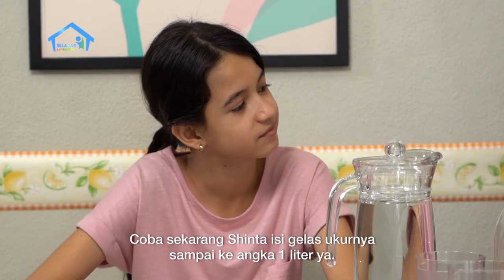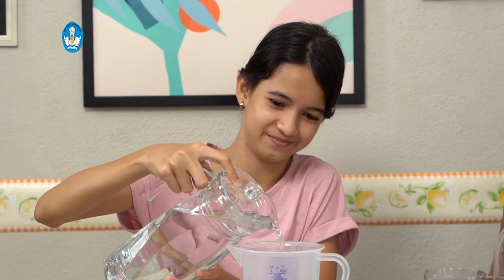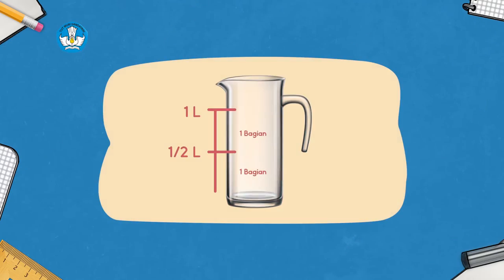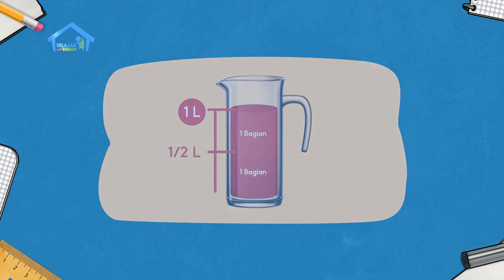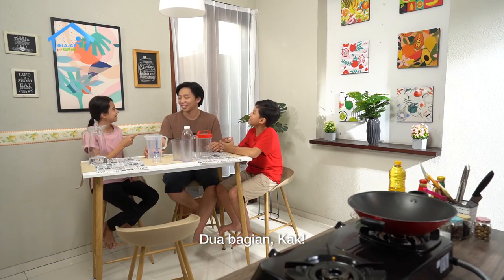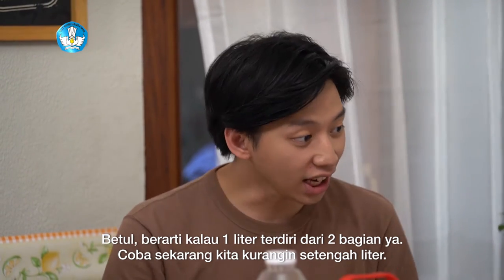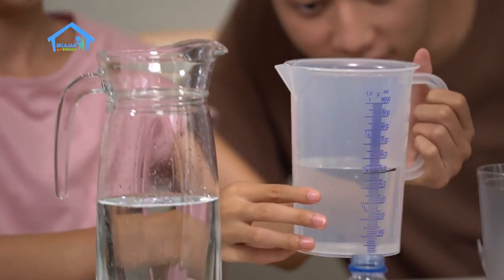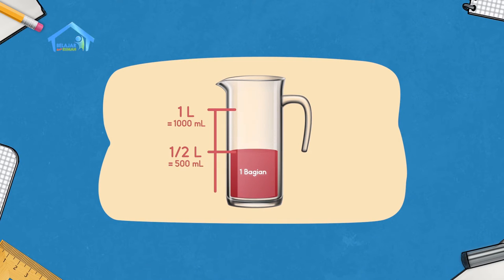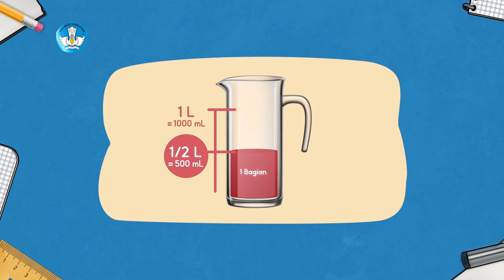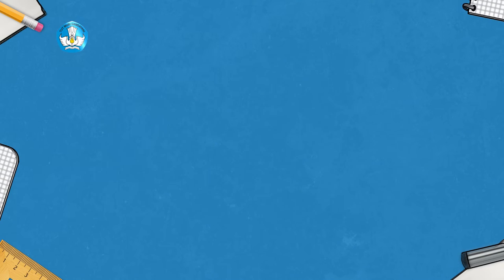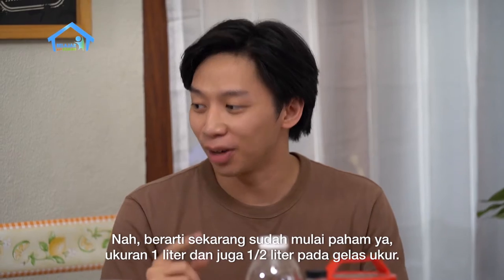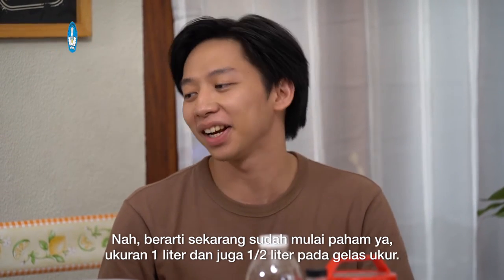Sekarang karena kita ingin mengetahui ukuran 1 liter dan juga 500 ml, Kak Jo akan kasih tanda pada bagian setengah yaitu 500 ml ya, bagian tengah. Berarti sekarang ada satu bagian di atas setengah liter dan satu bagian di bawah setengah liter. Coba sekarang Sinta isi gelas ukurnya sampai ke angka 1 liter ya. Sekarang ini menunjukkan pada angka berapa? 1 liter, Kak. Betul Dodi. Berarti kalau 1 liter menunjukkan berapa bagian? 2 bagian, Kak. Betul, berarti 1 liter terdiri dari 2 bagian ya. Coba sekarang kita kurangin setengah liter. Sekarang ada di angka berapa ukurannya? 500 ml. Betul Dodi. Berarti ada berapa bagian? 1 bagian, Kak. Jadi volume setengah liter terdiri dari 1 bagian, yaitu setengah dari 2 bagian yang sama besarnya. Betul sekali.